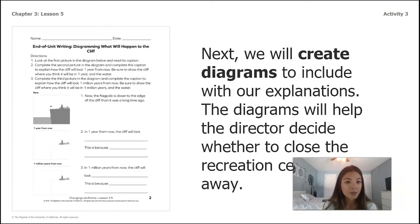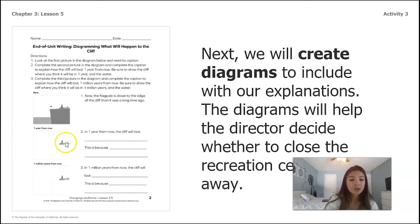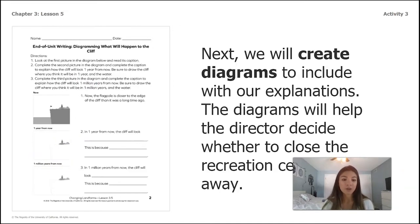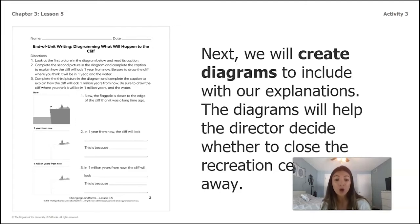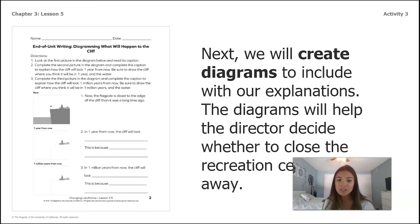Direction two says: complete the second picture in the diagram and complete the caption to explain how the cliff will look one year from now. Be sure to draw the cliff where you think it will be in one year and the water. In this box, use what you've learned so far in this chapter about erosion to think about what that cliff might look like in one year. Then complete the sentence stems: 'In one year from now, the cliff will look ___ . This is because ___ .' When completing the captions, make sure you're thinking about all the different sources you can pull information from, such as the handbook of land and water, our mountain model, and anything else you've learned throughout the chapter.